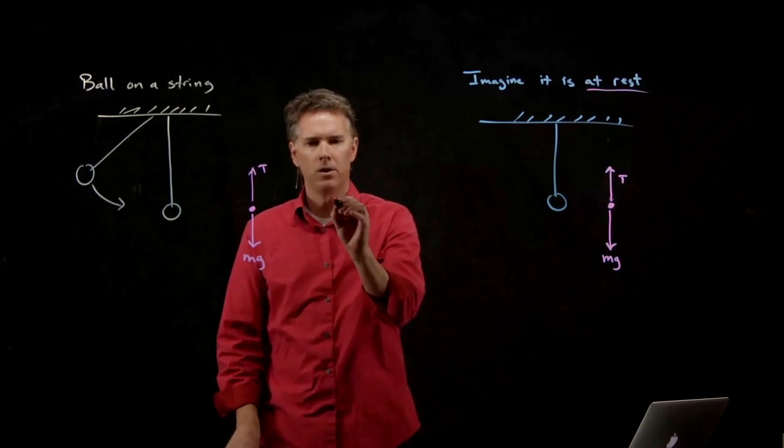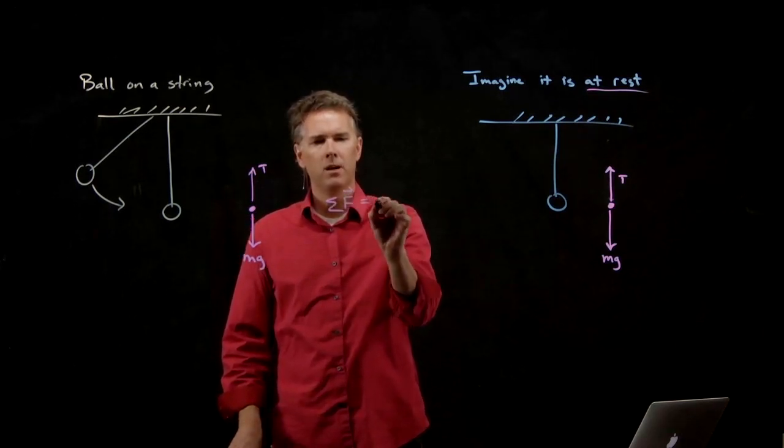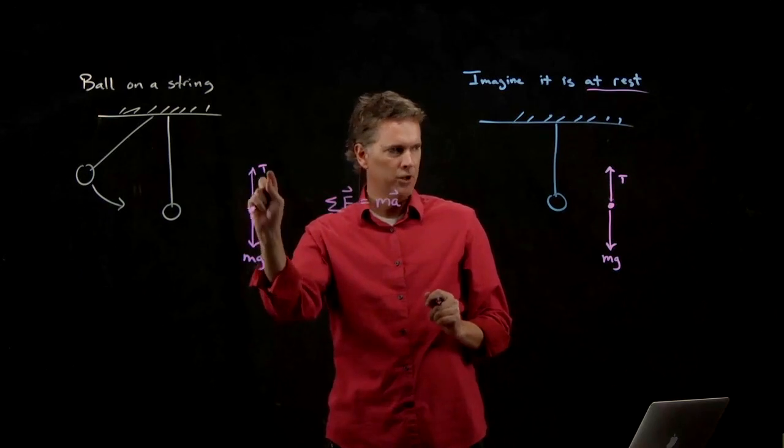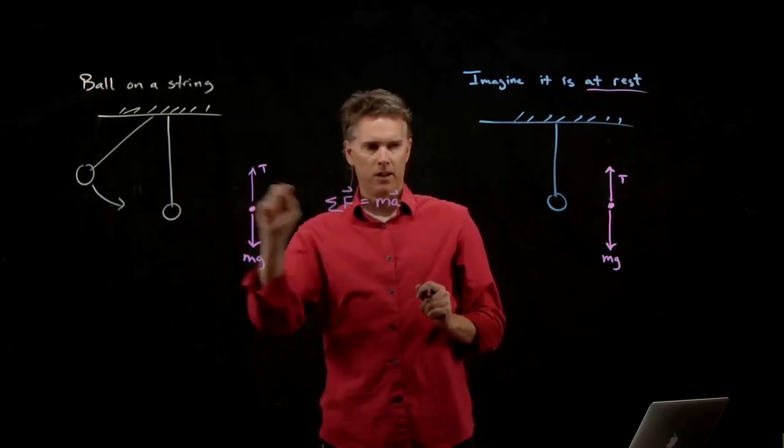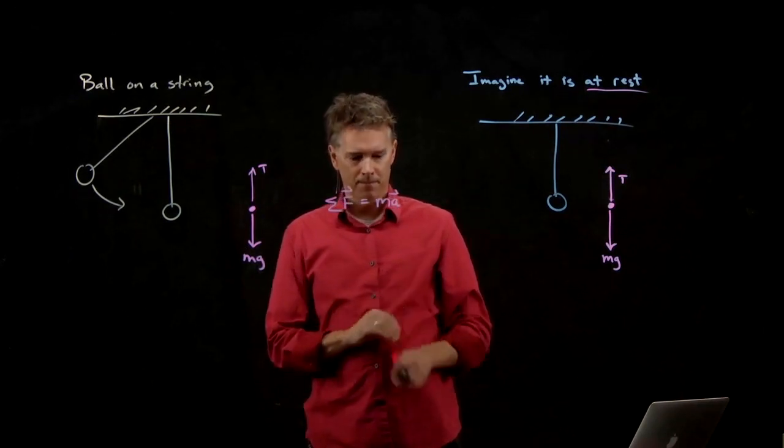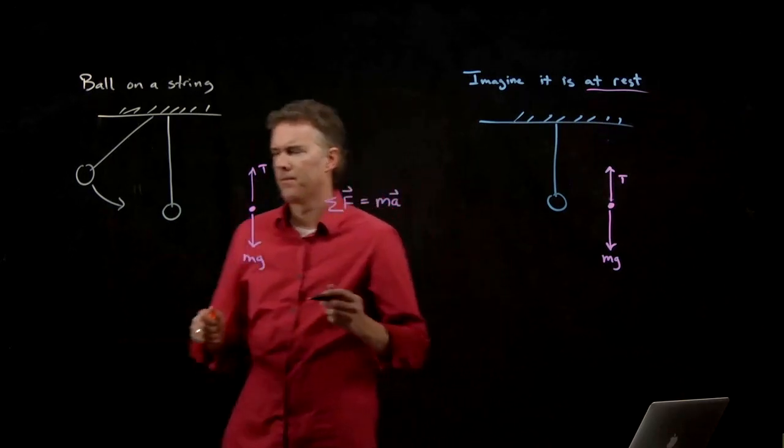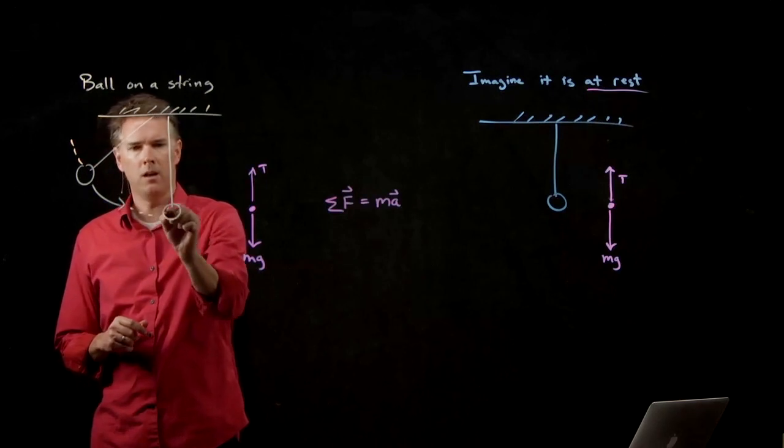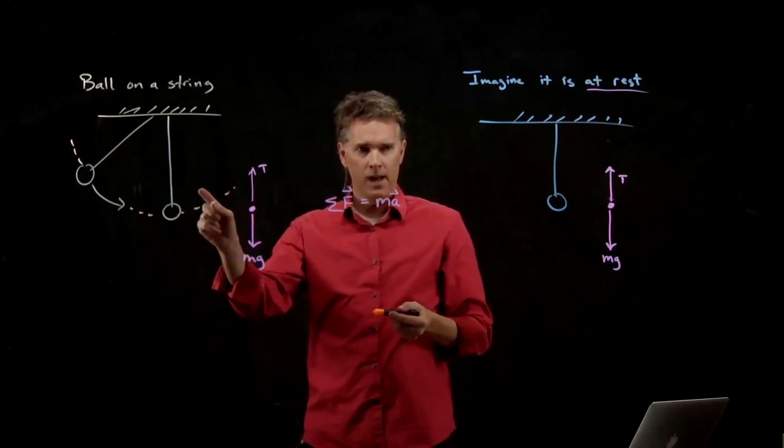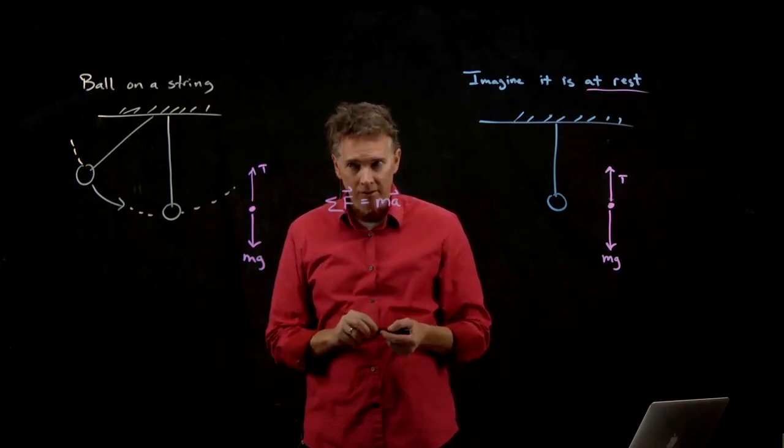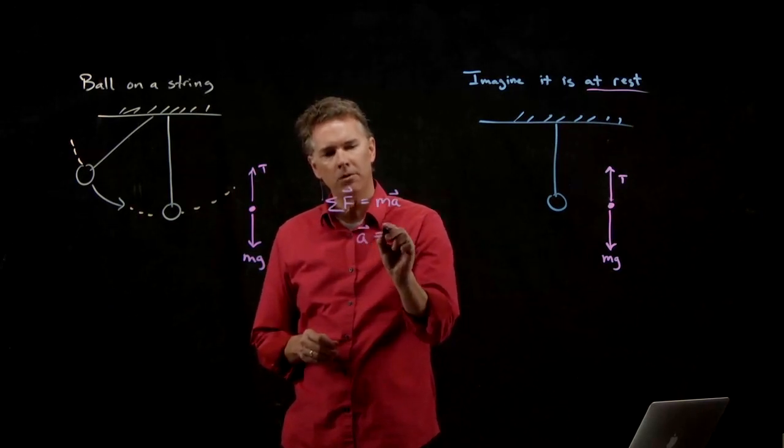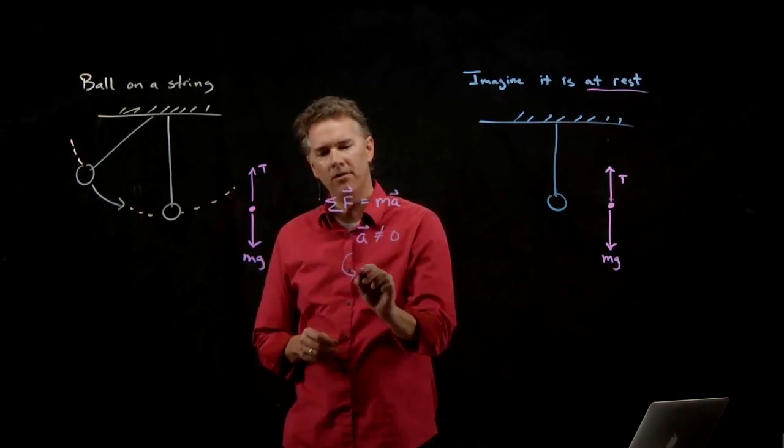And to figure that out, we've got to go to Newton's second law. Sum of the forces equals the mass times the acceleration. If these are equal and opposite, I'm saying the acceleration is zero. Is the acceleration zero for this ball? Remember, this thing is swinging in a circle. So is that ball accelerating? If it's going to change its direction, it is accelerating.